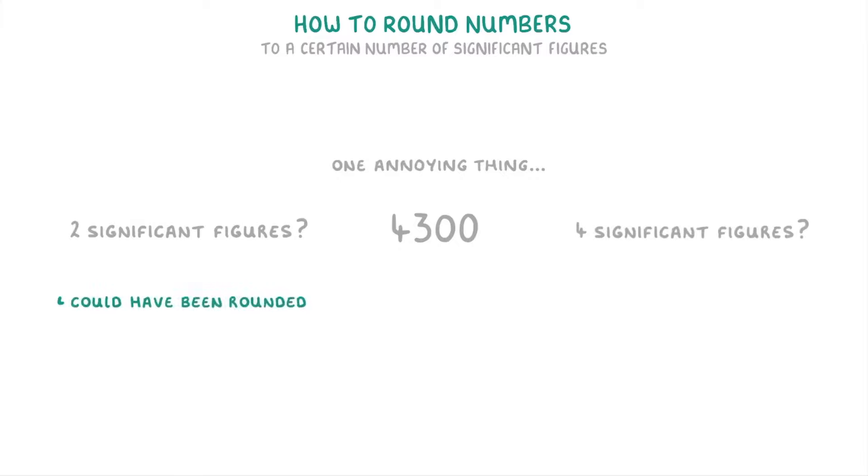This is because it could have been rounded to two significant figures from a number like 4315 or something. But it could also be exactly 4300 and not have been rounded at all, in which case the two zeros would count as significant figures as well. There isn't really any way of knowing which one it is, and it shouldn't really matter in your exams. But it is worth you being aware of.